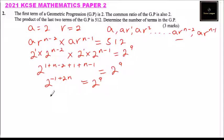So this means that minus 1 plus 2n equals 9. We take 1 to the other side, we have 2n equals 10, implying that n equals 5.